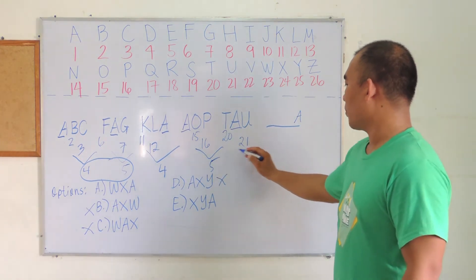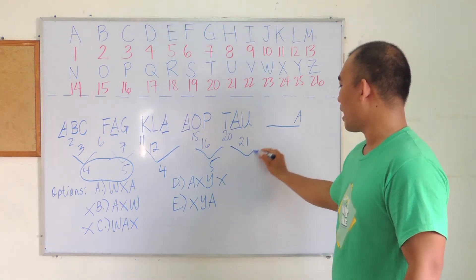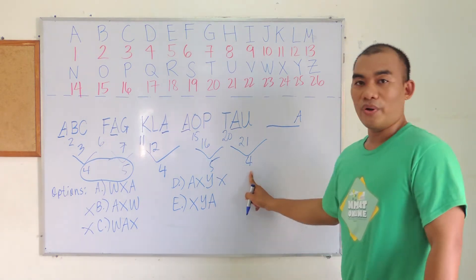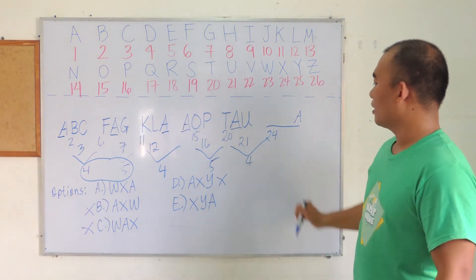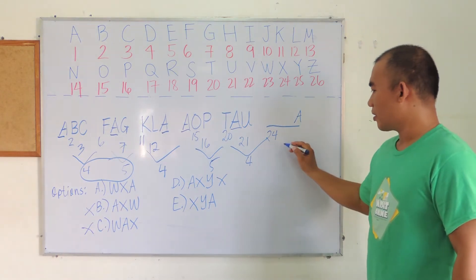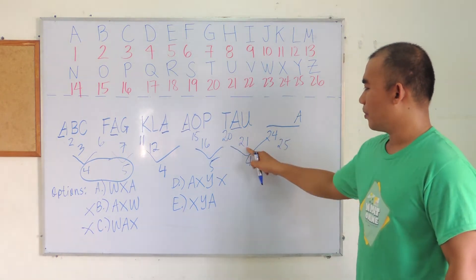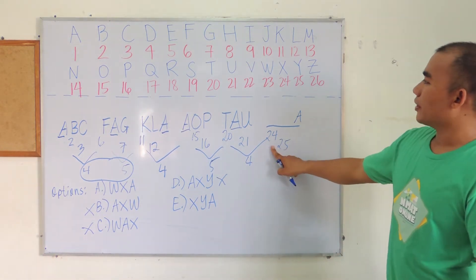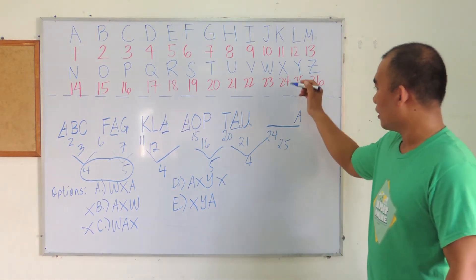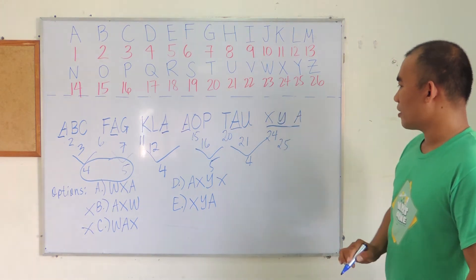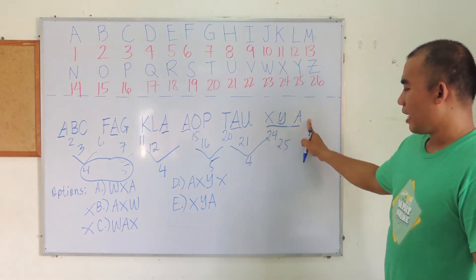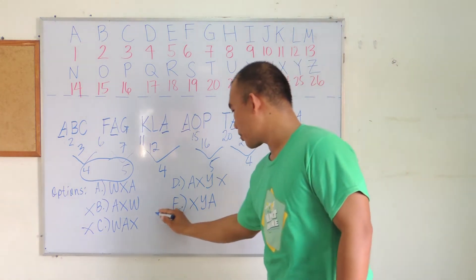So the next number from 20, we have plus 4, so we have 20 plus 4, that's 24. Then the next number is 25. So we see the pattern. The 24th letter is X and we have Y. So the correct answer is X, Y, A, and that is Option E.